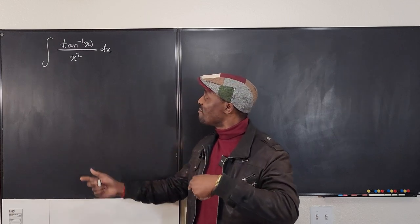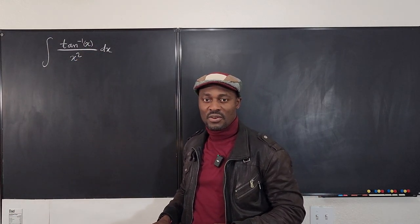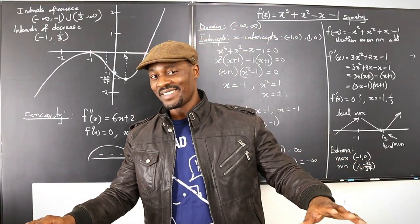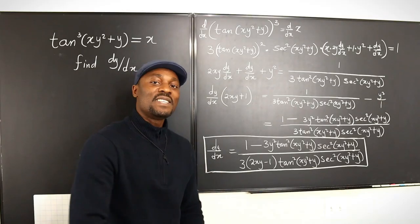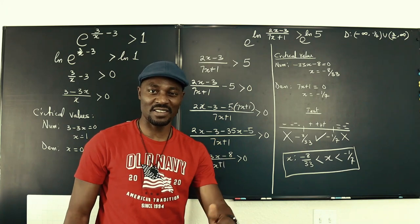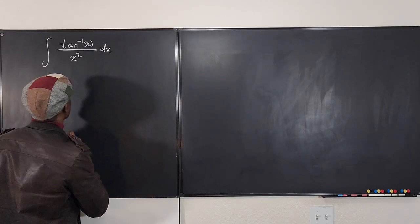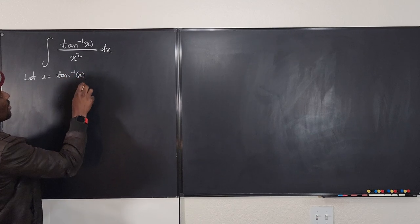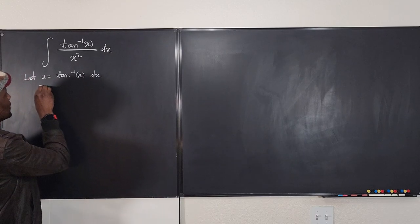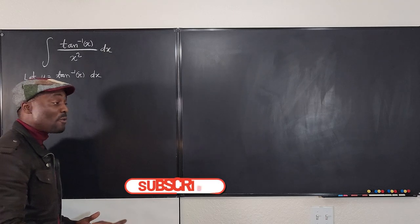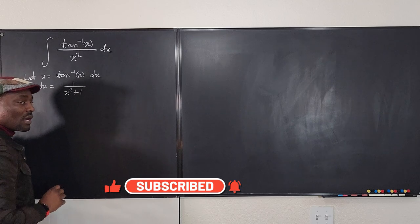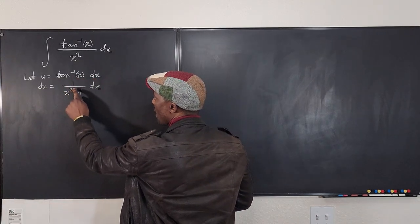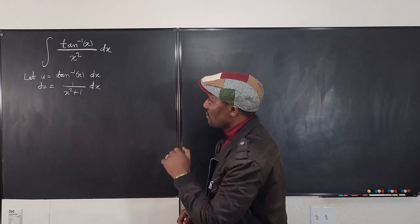So let's make u equal to arctan(x) and see what we get. We write u = arctan(x), and take the derivative. We know the derivative of arctan(x) — that's why we chose it — it's 1 over x² + 1. So the differential is du = 1/(x² + 1) dx.